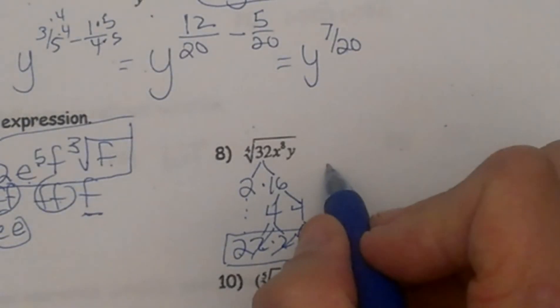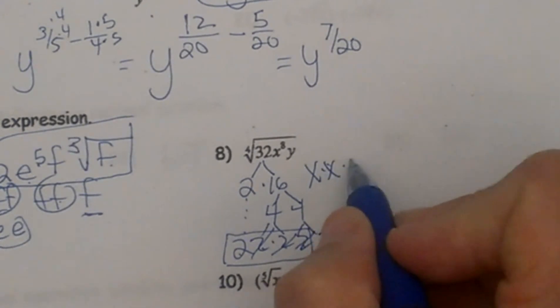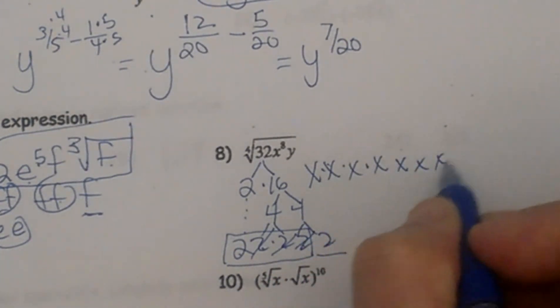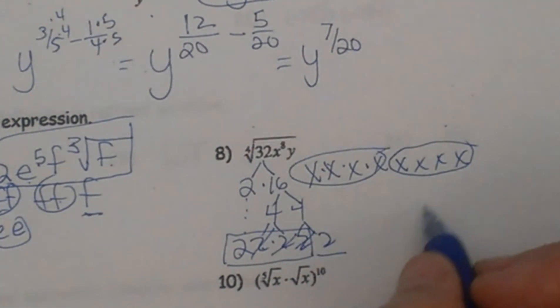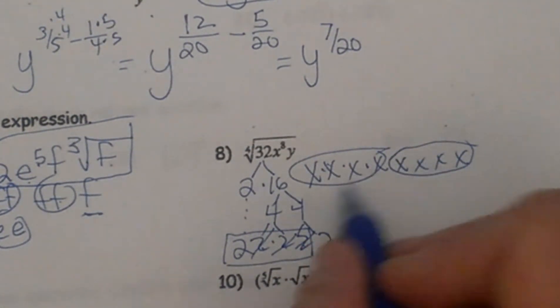Okay, x to the 8th. So I have 8 x's. So how many groups of 4 is that? 1, 2. I have 2 groups of 4 with none left over. So I will bring out an x squared.